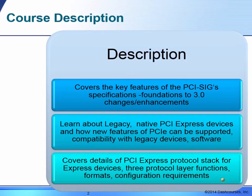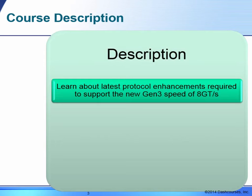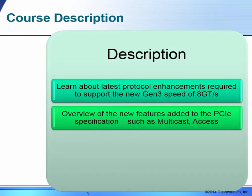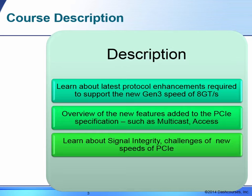There are 3 protocol layer functions. We will be looking at the formats and the configuration requirements. You will be learning about the latest protocol enhancements required to support the new Gen 3 speed of 8 giga transitions per second. We will take an overview of new features such as multicast, access control services, and signal integrity challenges at 8 Gbps.